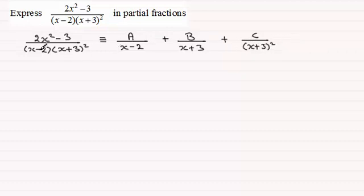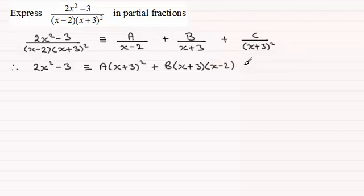And then we multiply throughout by the denominator here x minus 2 times x plus 3 all squared. So if you multiply the left hand side with this denominator you're going to be left with 2x squared minus 3 and then this is going to be identical to A times x plus 3 all squared then you're going to have for this term B times x plus 3 times x minus 2. And for the last term here it's going to be plus C times x minus 2.